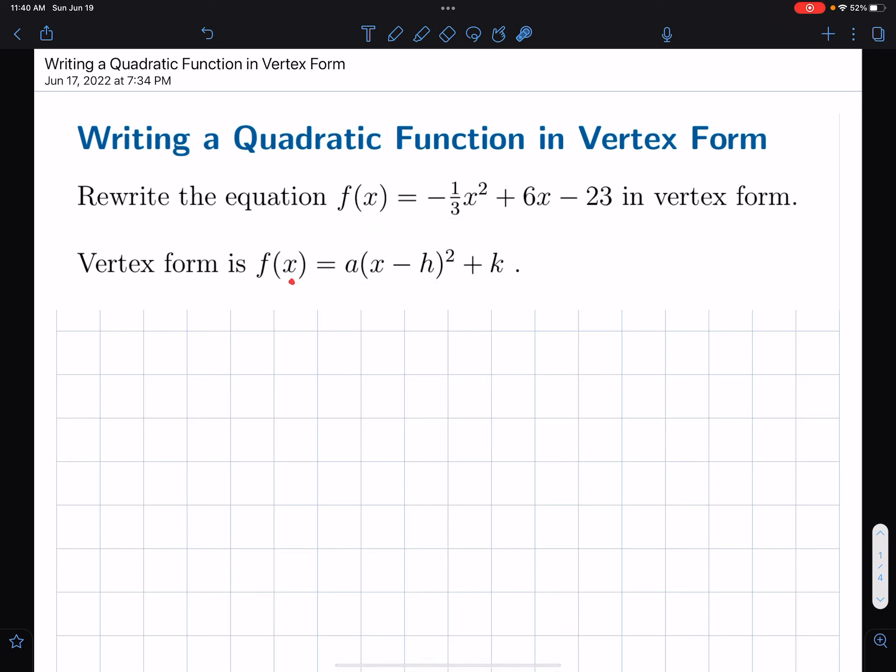f of x equals a times x minus h squared plus k. And what happens when you have this form here is that this tells us right off what the vertex is. The vertex here is hk. So that's why one of the reasons we might want to write in this form. There's other reasons, but that's a good reason. So we could find the vertex of this quadratic.